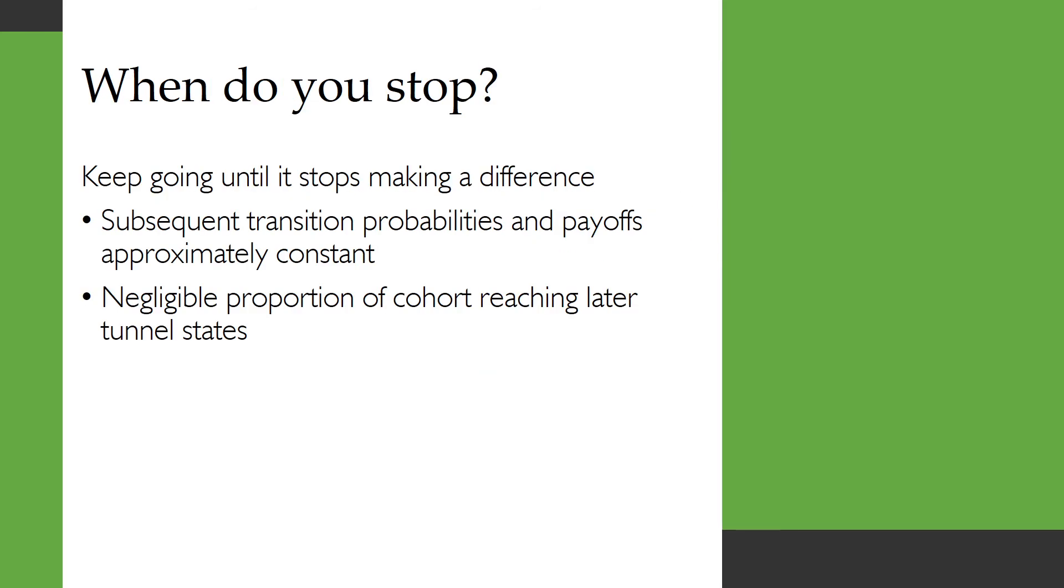So when do you stop adding tunnel states? How many should you have in your model? I would say you should keep going until it stops making a difference and that will generally happen when either your subsequent transition probabilities and payoffs are approximately constant so it's not really making a difference because each of the new states looks very much like the previous state or because there's a negligible proportion of the cohort is reaching those tunnel states that you're adding. So the disease survival is so poor that people aren't reaching those later on tunnel states.